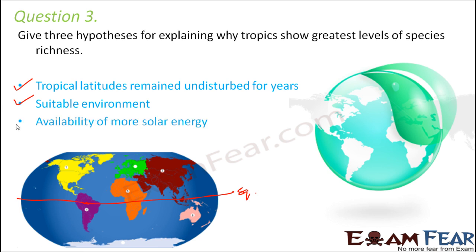The third hypothesis is availability of more solar energy. Solar energy is required for the sustenance of living organisms. Due to its location, the equator receives more solar energy, and due to the presence of more solar energy the productivity of living organisms is higher, so they are able to survive better there. These are some of the hypotheses which explain why the concept of latitudinal diversity gradient exists.